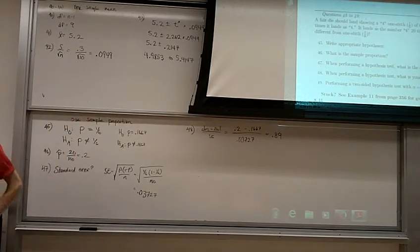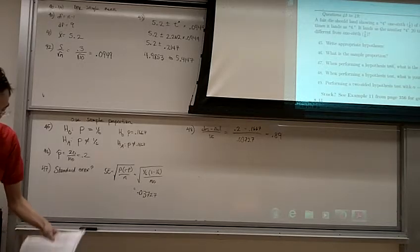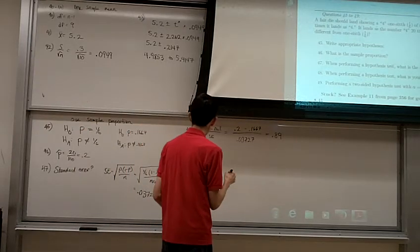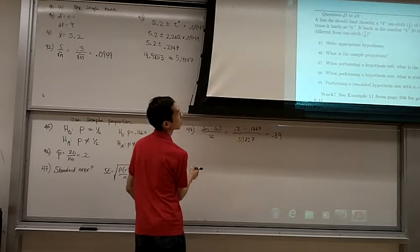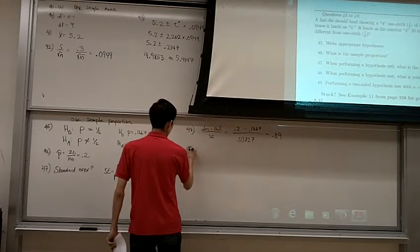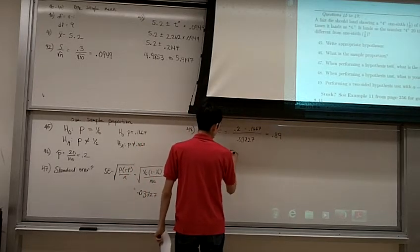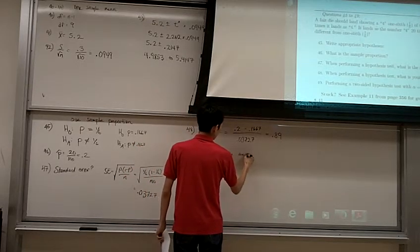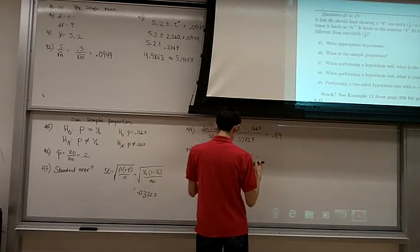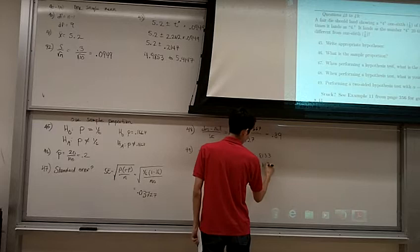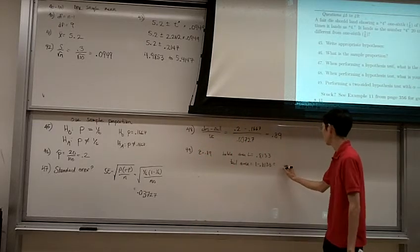We look up 0.89 in the table, and the area to the left is 0.8133. Alright, so z is equal to 0.89, so the table, the area to the left is 0.8133, so our tail area is 1 minus that. And so that gives me 0.1867.